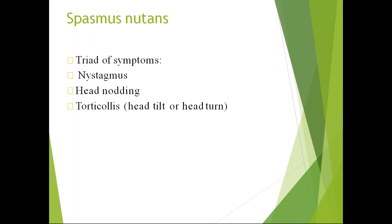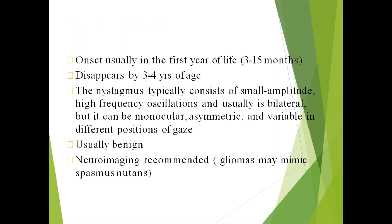Spasmus nutans consists of a triad: nystagmus, head nodding, and torticollis (head tilt or turn). It usually appears between 3 to 15 months of age and disappears by 3 to 4 years. It has small amplitude but high-frequency oscillations, is usually bilateral but can be monocular, and is asymmetric and variable in different gaze positions. It is usually benign, but neuroimaging is recommended as gliomas may mimic spasmus nutans.